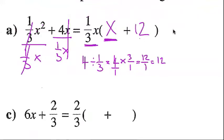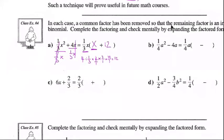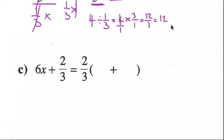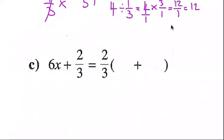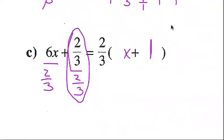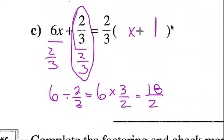For question c: 6x + 2/3, factoring out (2/3). Dividing: (2/3) ÷ (2/3) = 1. For 6x ÷ (2/3): the x stays, then 6 ÷ (1/3) — multiply by the reciprocal: 6 × 3/1 = 18, over 2 = 9. So we get (2/3)(9x + 1). The rule to remember: dividing by a fraction means multiplying by the reciprocal.